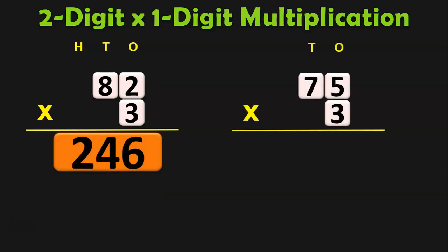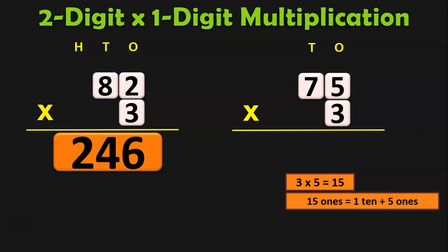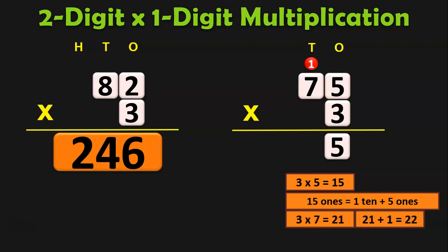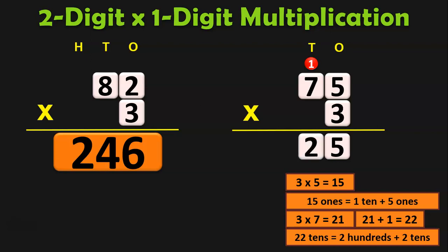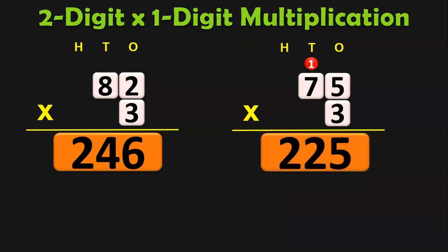Next sum: 75 into 3. 3 into 5 is 15 — regroup 15 ones as 1 ten plus 5 ones — so 5 in the ones place and 1 carried over to the tens place. Next, 3 into 7 is 21, plus 1 is 22. 22 tens is 2 hundreds plus 2 tens, so 2 in the tens place and 2 moves to the hundreds place. The product is 225. Here we saw regrouping of both the ones and tens place.